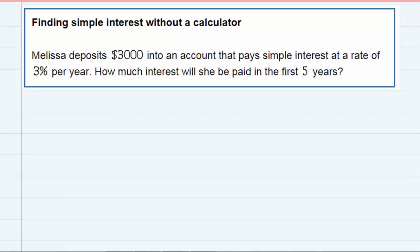Finding simple interest without a calculator. Melissa deposits $3000 into an account that pays simple interest at a rate of 3% per year. How much interest will she be paid in the first 5 years?